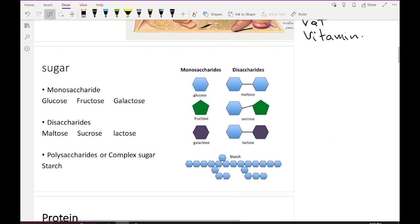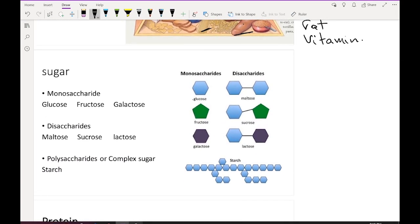Starting with sugar, sugars are divided into three types: first type is monosaccharide, second type is disaccharide, and third type is polysaccharide. Monosaccharide means formed of one sugar molecule, disaccharide means two sugar molecules, and polysaccharide means three and above.